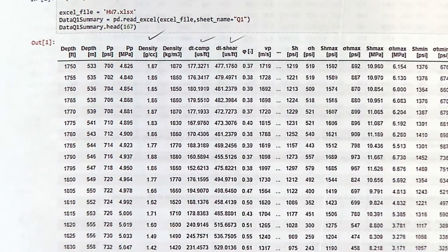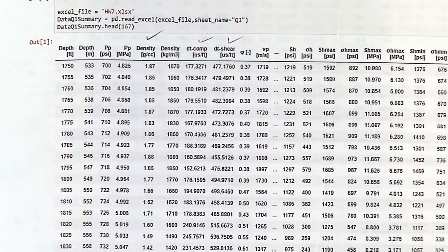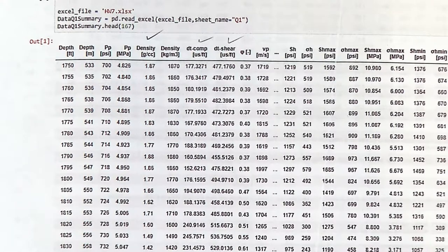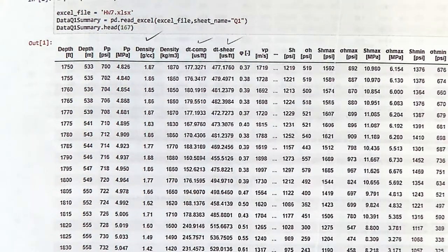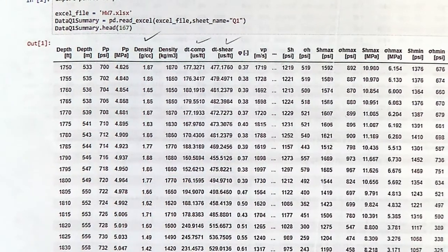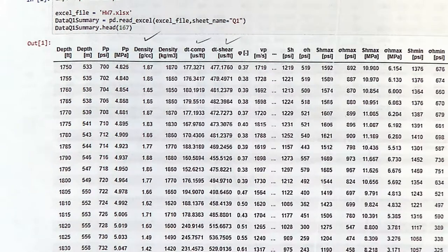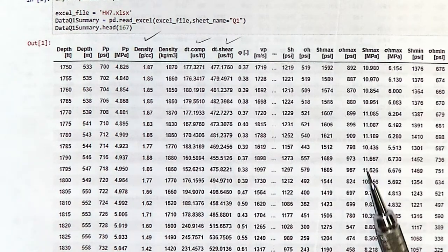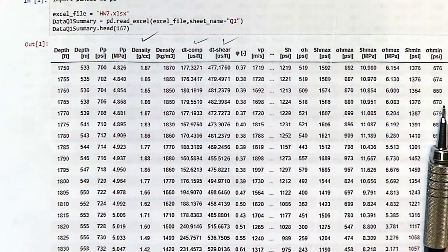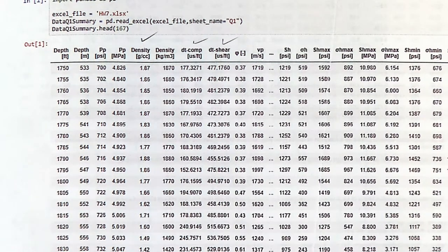The stiffer the rock, the faster the velocity. With that you can calculate the constrained modulus of the rock. Assuming a tectonic strain and using Poisson's ratio, you can determine the horizontal stress. This is an expanded version of what we used before — calculating stress as a function at a given depth.